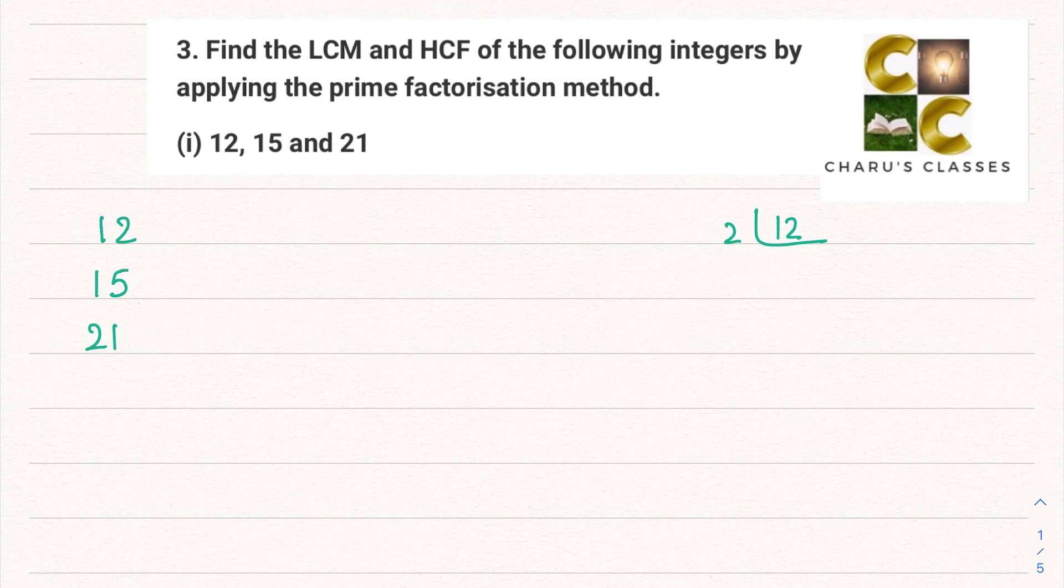Let's start with 12: 2, 6, 2, 3. So these factors are 2 × 2 × 3. 15 factors are 3 × 5, and 21 factors are 3 × 7.